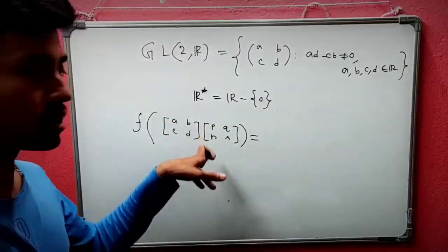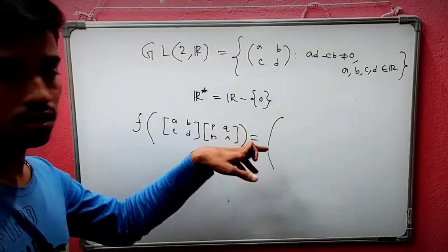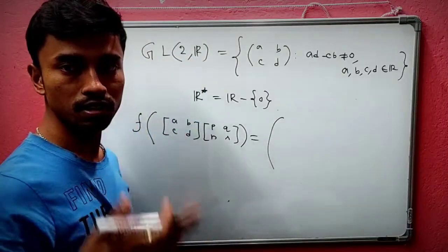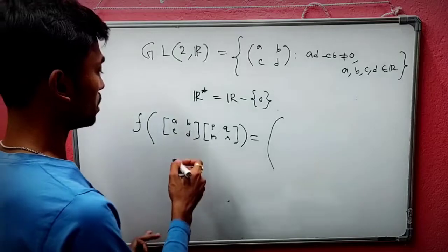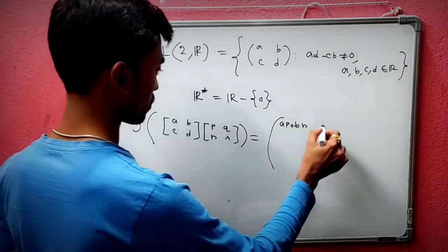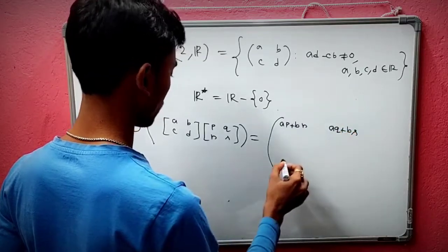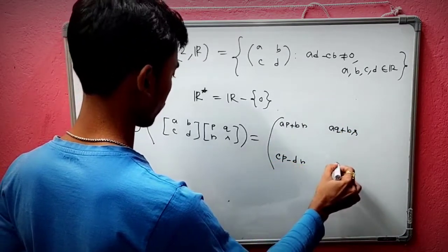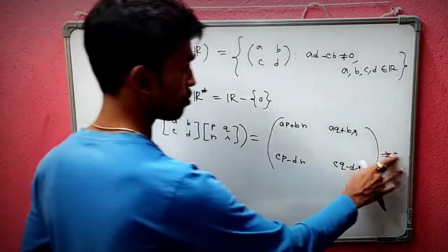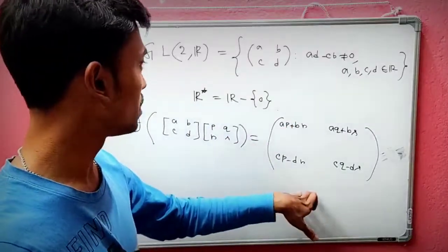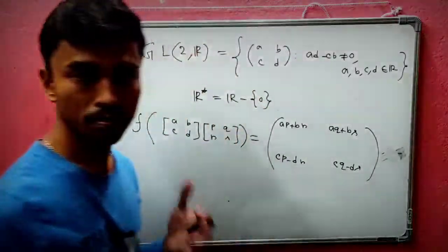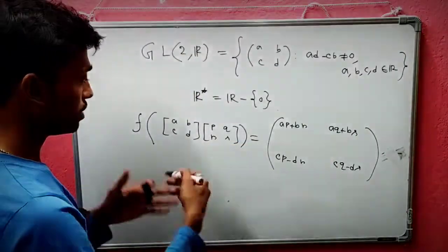We take two elements [a b; c d] and [p q; r s] in GL(2,R). They will each be mapped to something in R*. Since both have non-zero determinant and GL(2,R) is closed under multiplication, their product will again be an element of GL(2,R) with non-zero determinant.